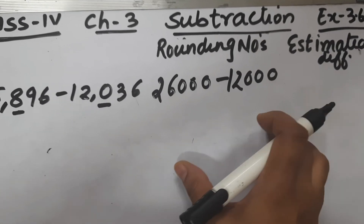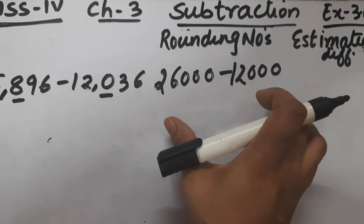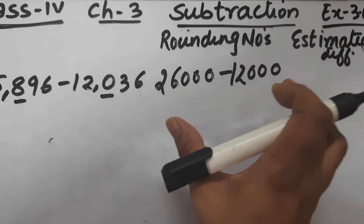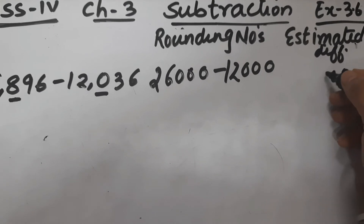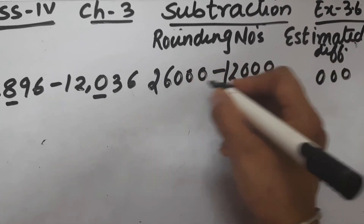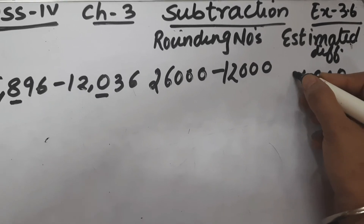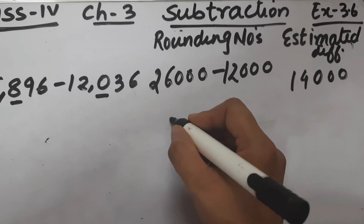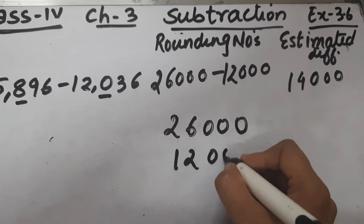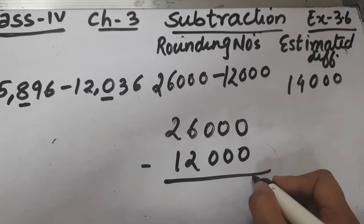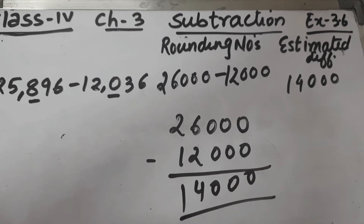Now we have to find the estimated difference. We subtract 26,000 minus 12,000. Zero, zero, zero — six minus two is four, and two minus one is one. So the estimated difference is 14,000.